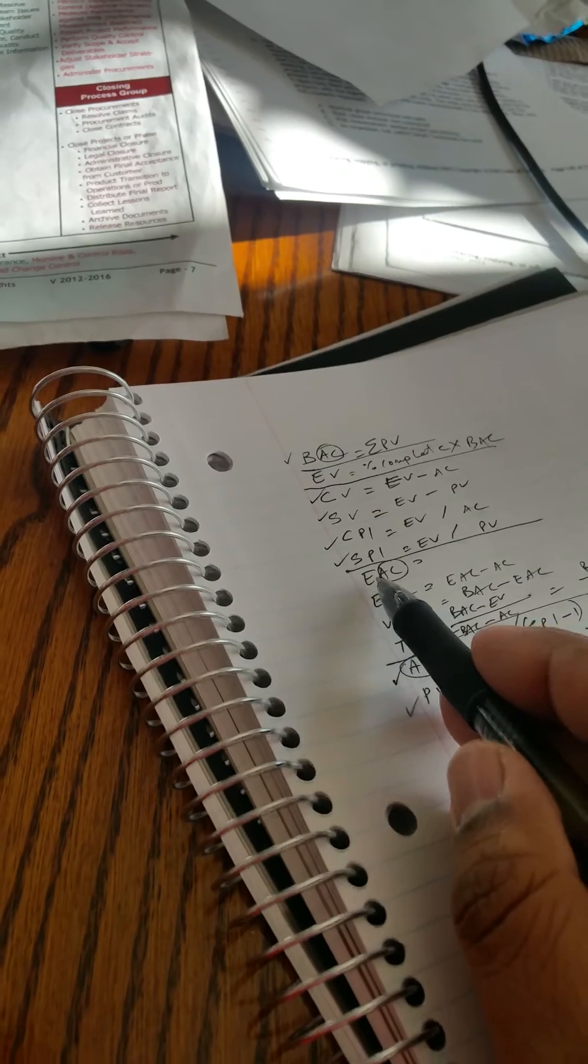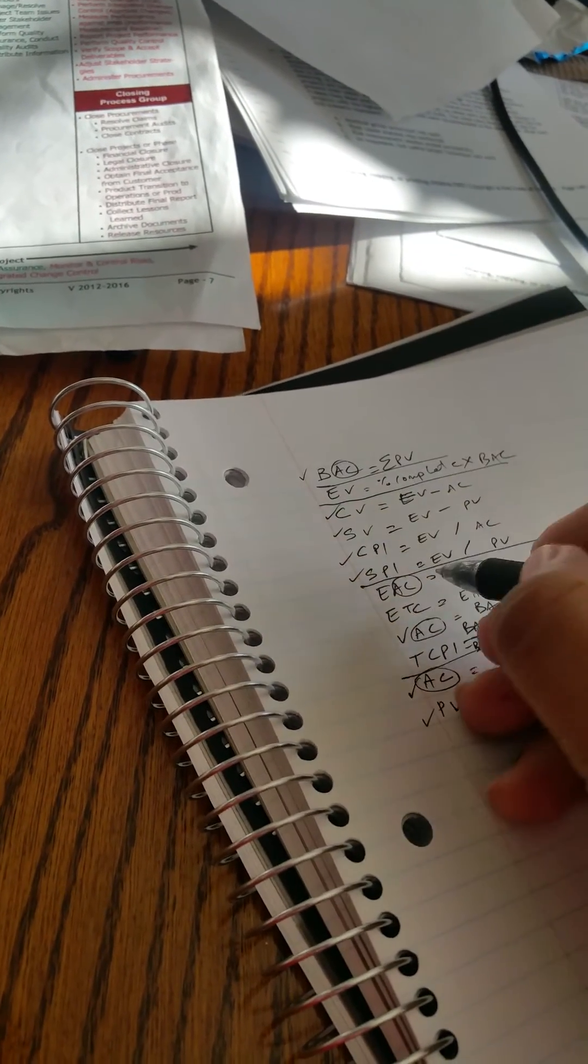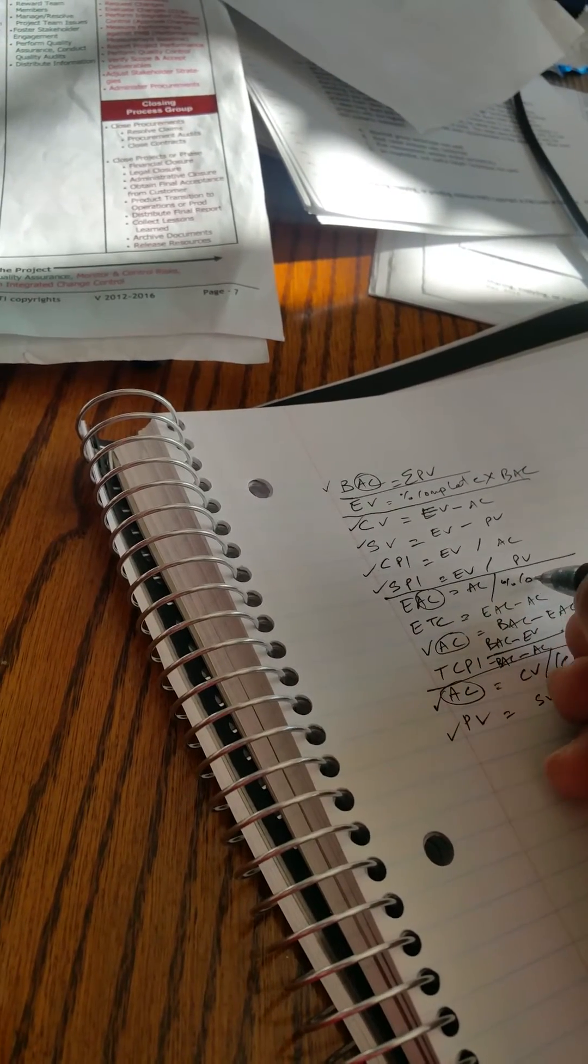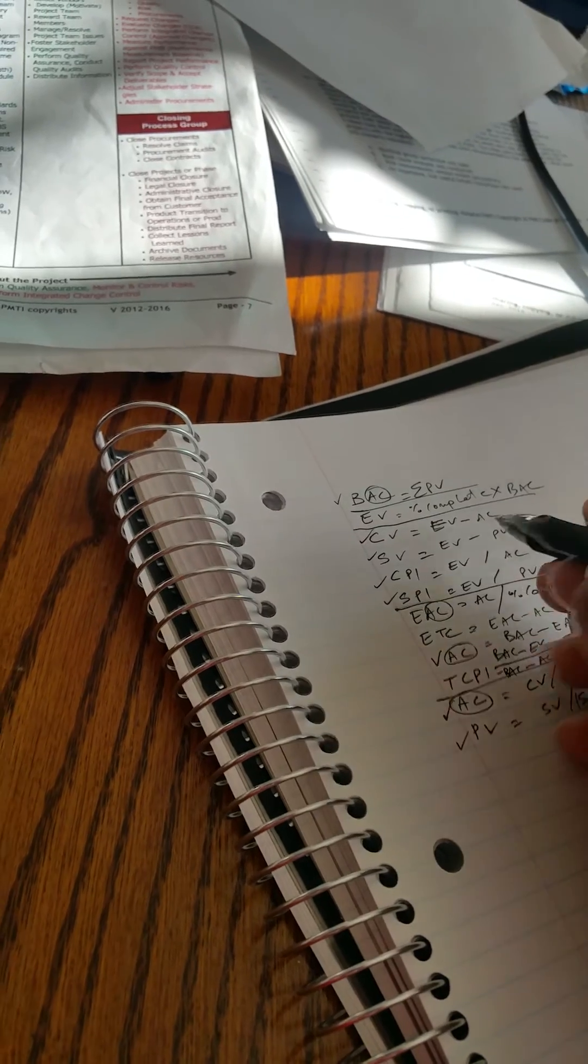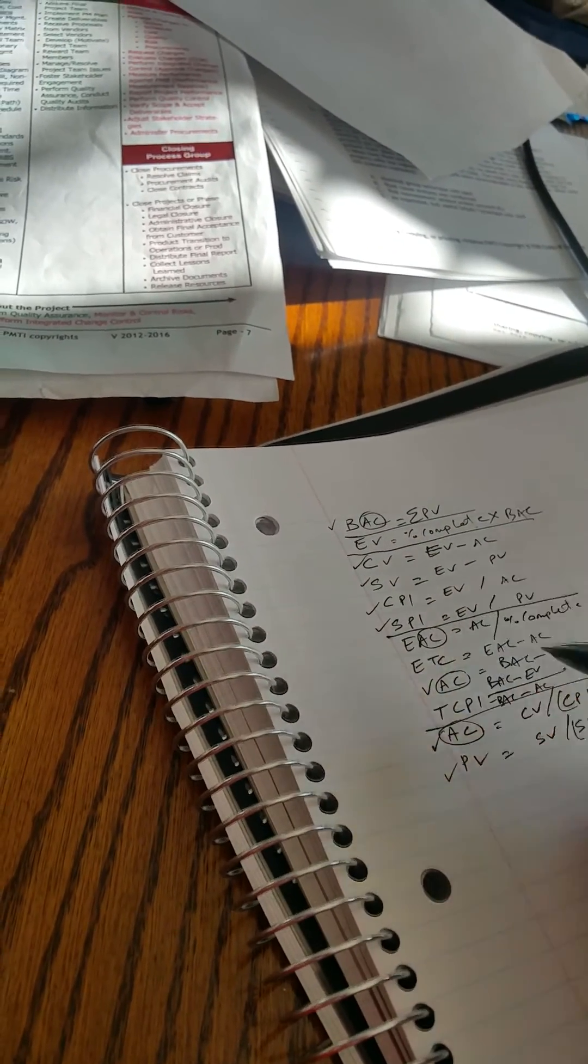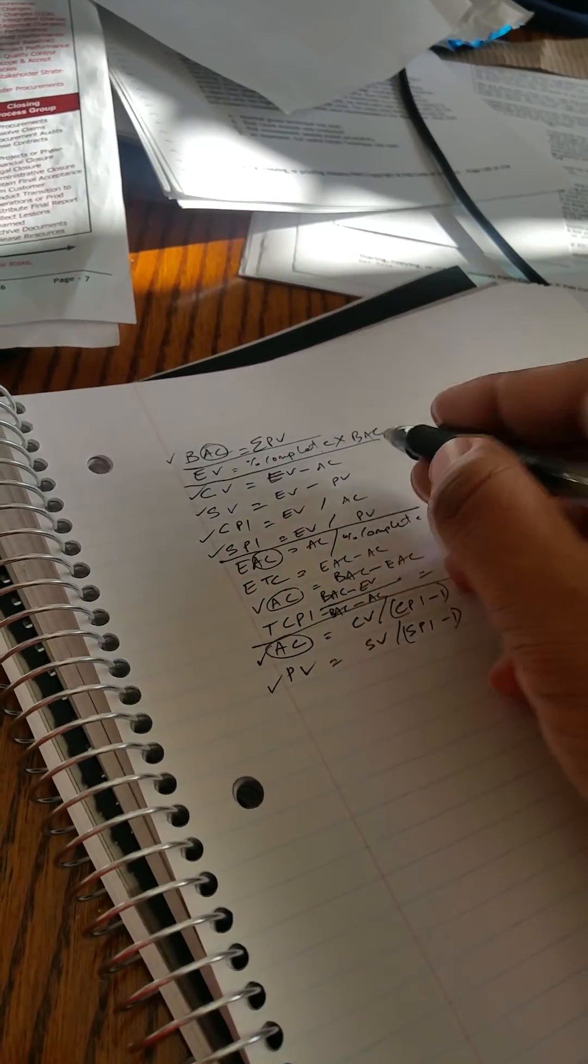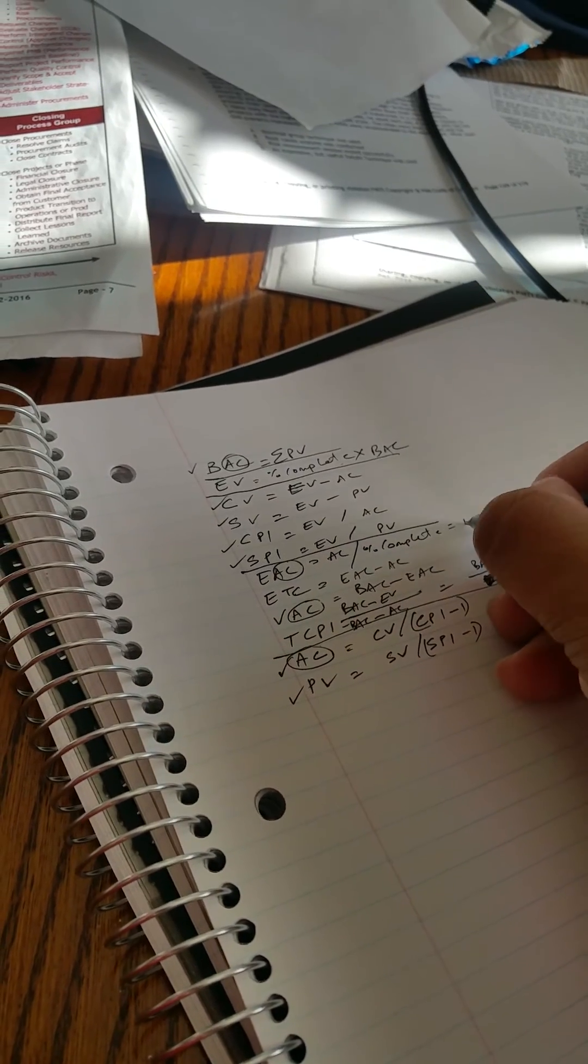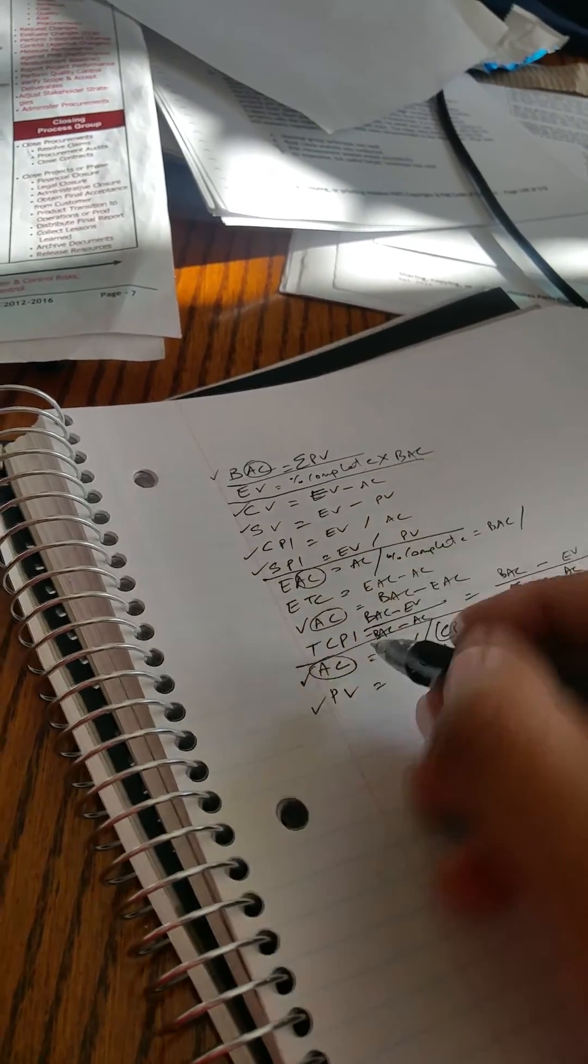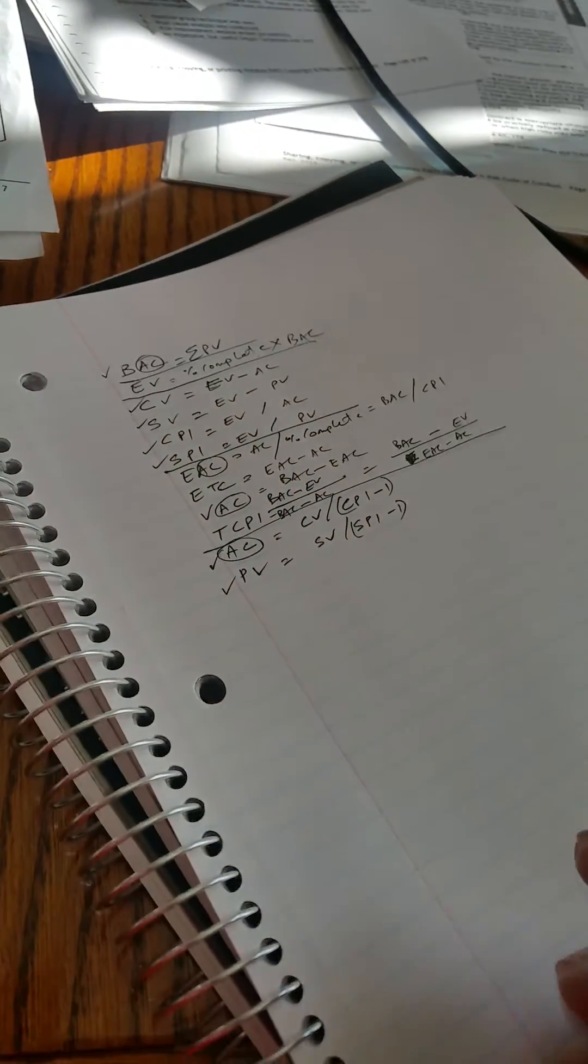Same here, EAC. I'm going to try to, now that I wrote this down, I'm going to try to take the AC divided by percent completion right there. Right there, you know, percent complete, percent complete, AC, AC. So that happens to be the equation for that. And then EAC is also BAC divided by CPI right there.